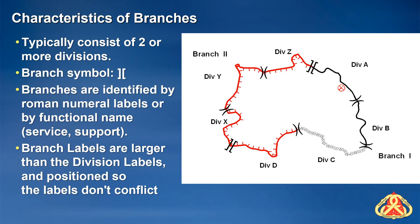Branches usually consist of two or more divisions and, as discussed before, also serve as a division break. Branches are numbered using Roman numerals or, on some incidents, may be labeled by functional name. Branch labels should be slightly larger than the labels for divisions and placed slightly farther out so they do not conflict with the division labels.